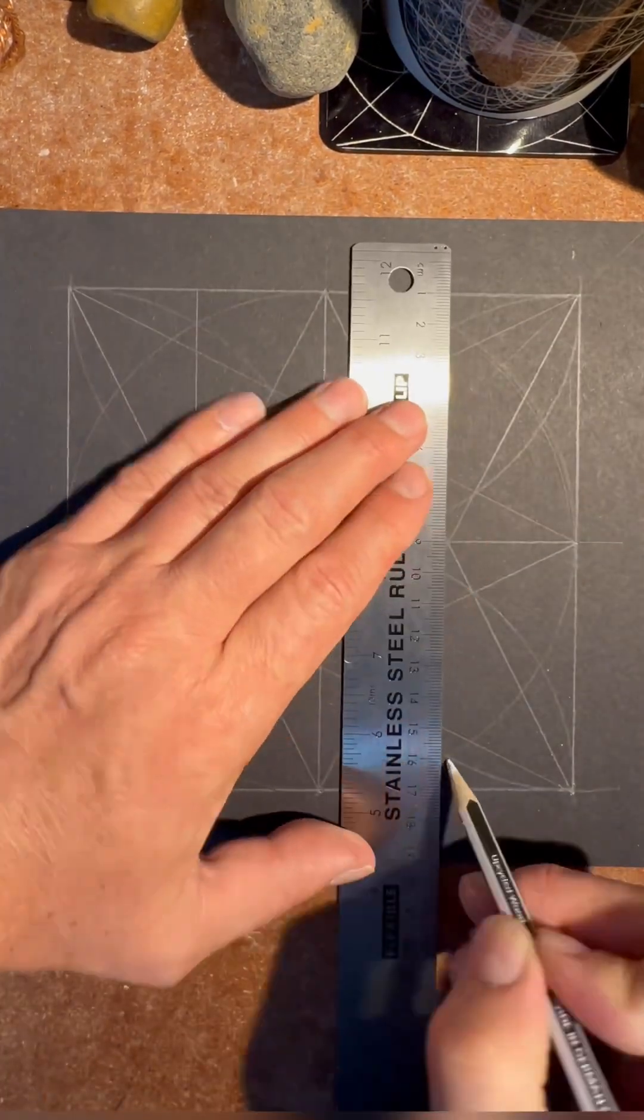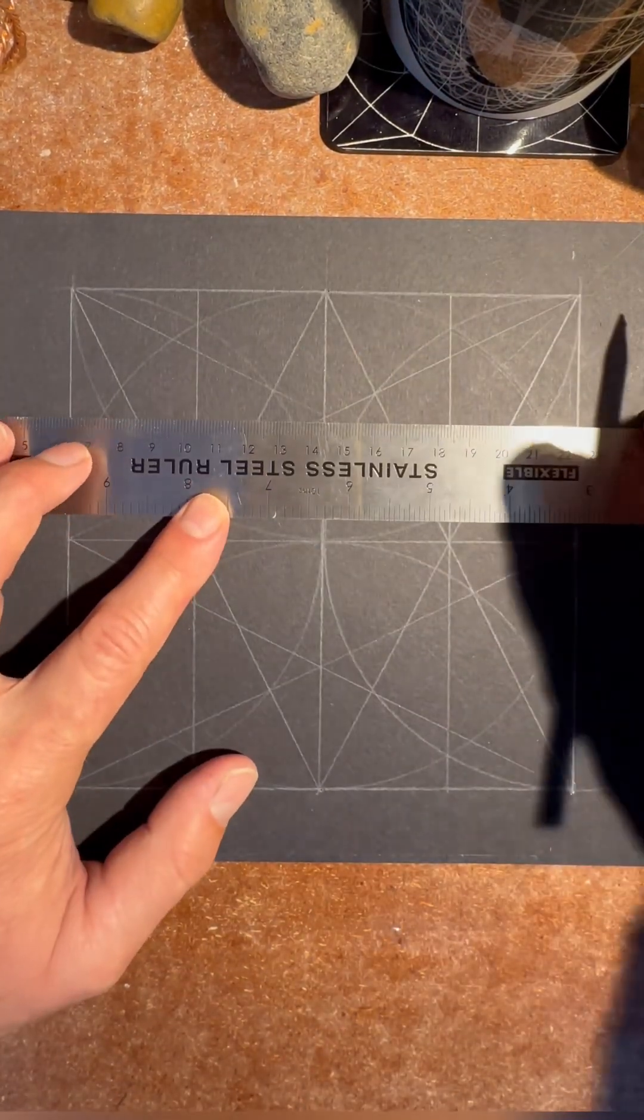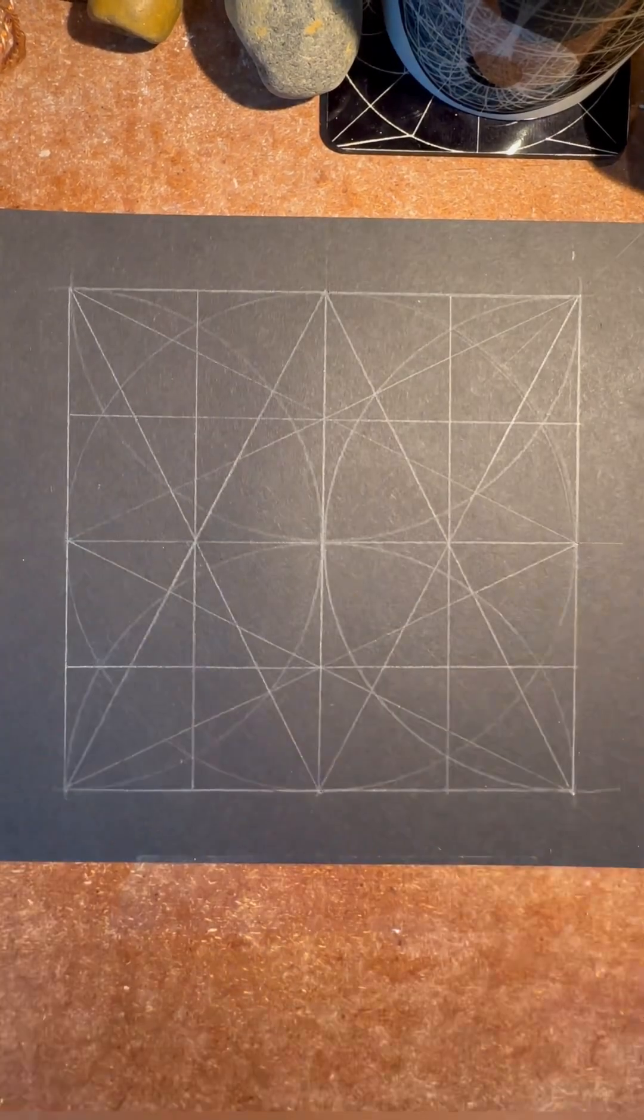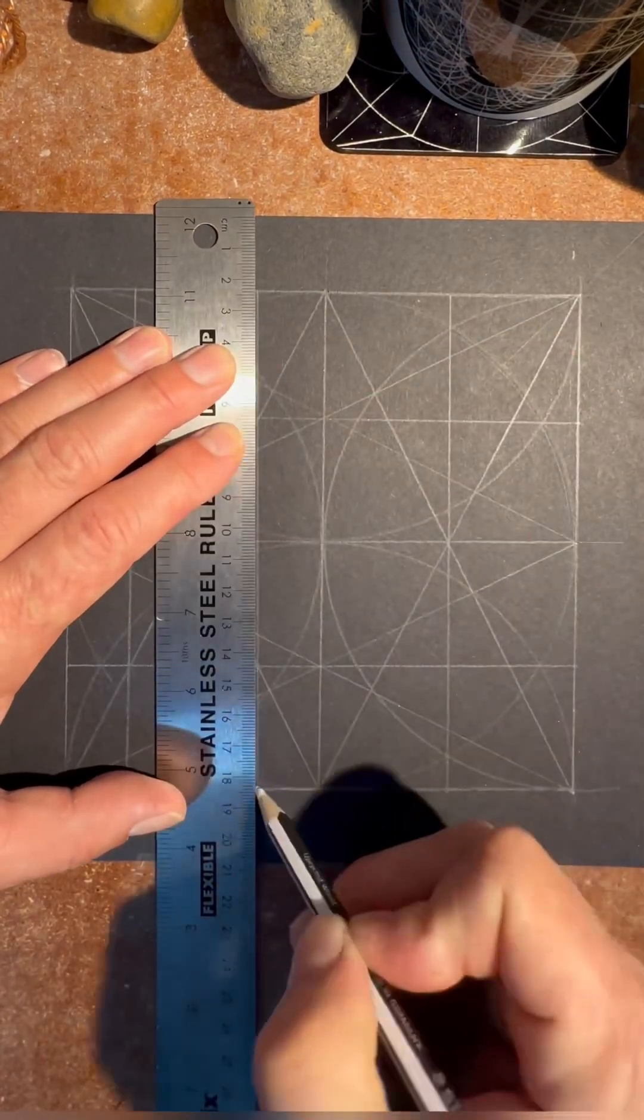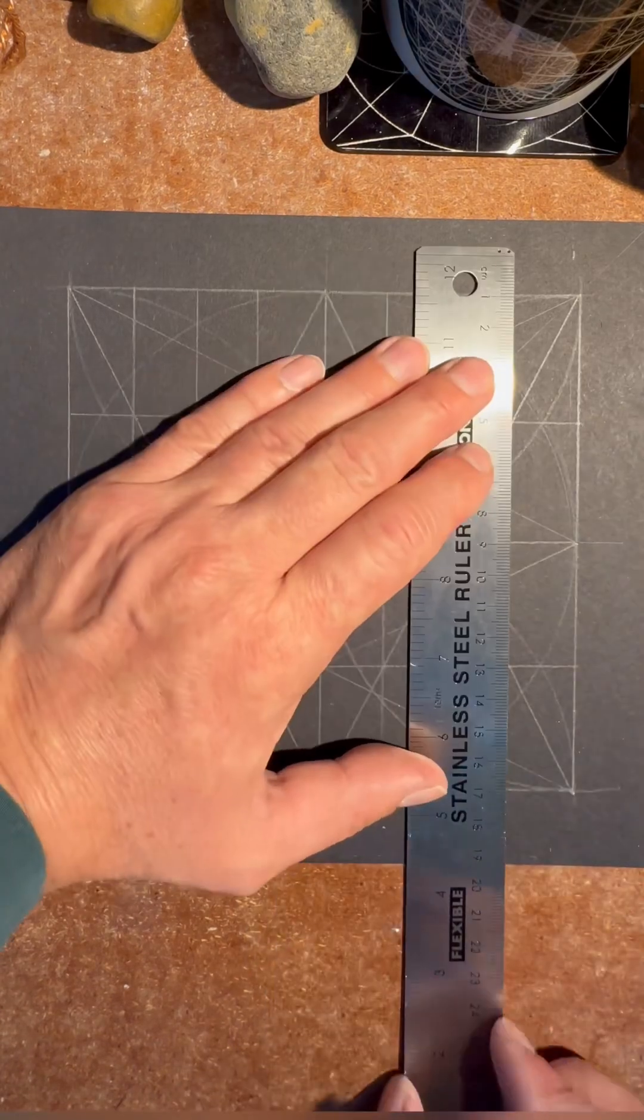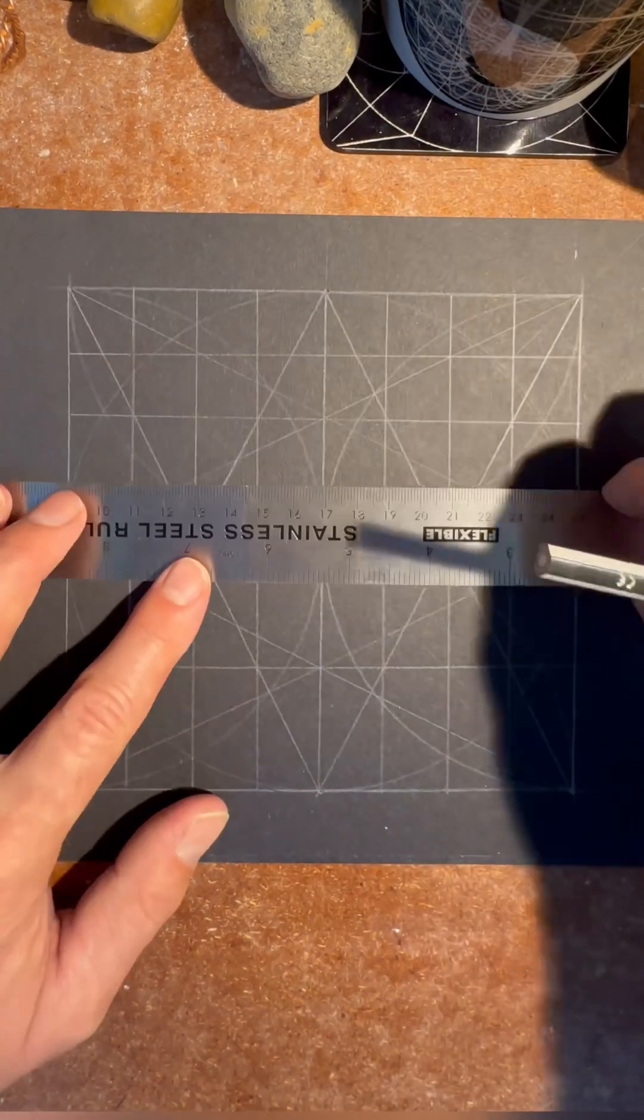Once you have this, where it meets the line, draw more lines to create 16 squares, and where they meet, draw more lines to make 64 squares.